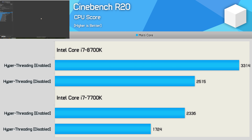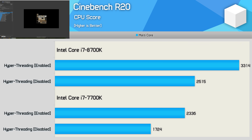First we have Cinebench R20 results. Looking at the Core i7-8700K, we see a 24% reduction in performance with hyperthreading disabled — that kind of performance drop won't go unnoticed. In terms of performance, we're essentially turning the 8700K into a 7700K, which is a fair downgrade. Meanwhile, the 7700K becomes 26% slower with hyperthreading disabled, reducing it to a plain quad-core, essentially a Core i5 of that generation. For applications that heavily leverage all cores, disabling SMT has a big impact.